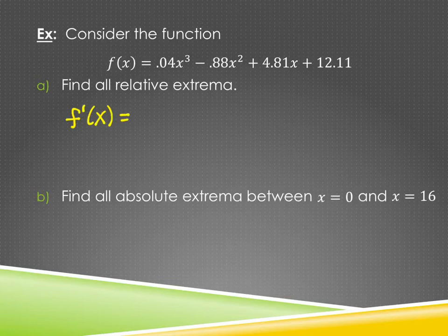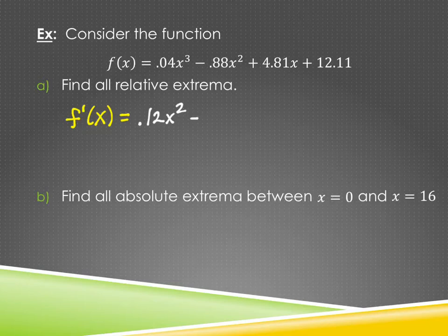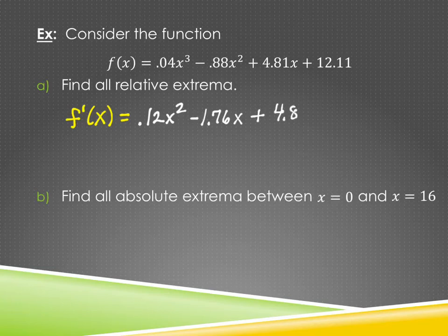The derivative of 0.04x³ is 0.12x². The derivative of −0.88x² is −1.76x. The derivative of 4.81x is 4.81. And the derivative of 12.11 is 0. So f′(x) = 0.12x² − 1.76x + 4.81. My goal then is to set this equal to zero.